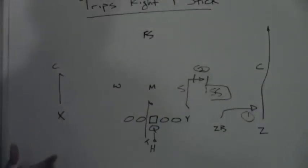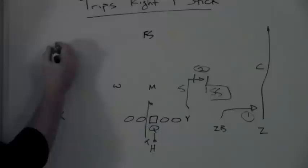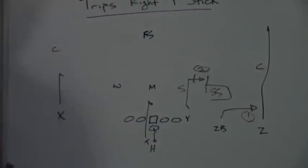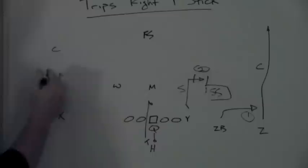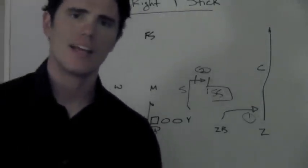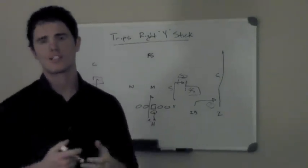During the pre-snap, if he sees off coverage to the backside on the X and it's a one-on-one situation, so maybe the cornerback is seven or eight yards off, the quarterback can feel free to take his three-step and throw the one-on-one situation there and pick up an easy completion, again, staying in second short or first and ten situations.